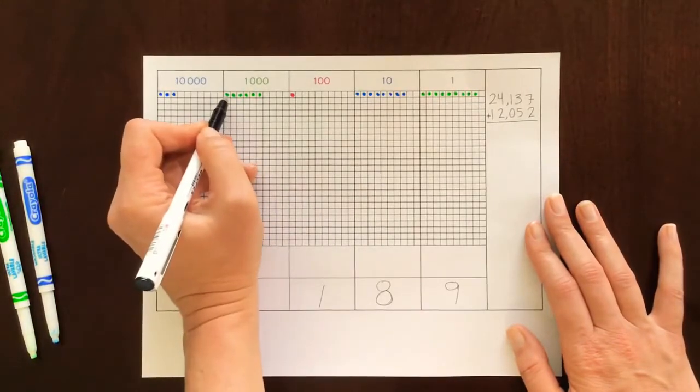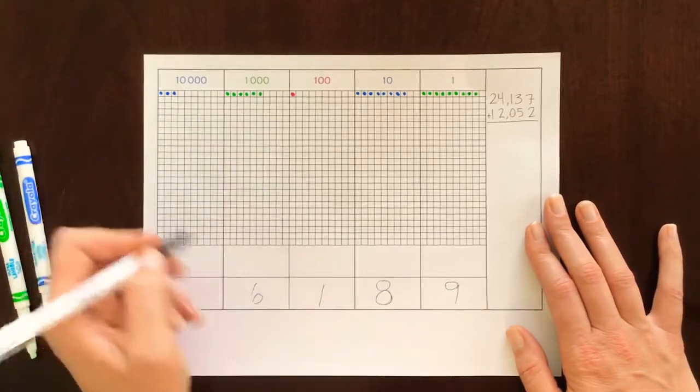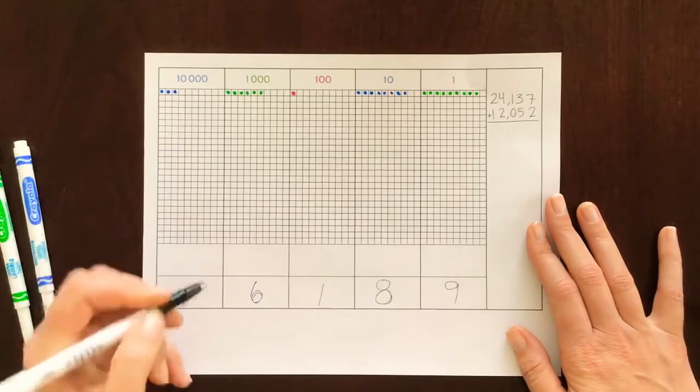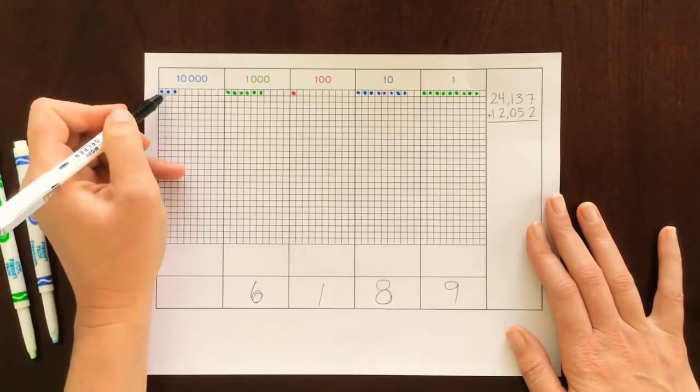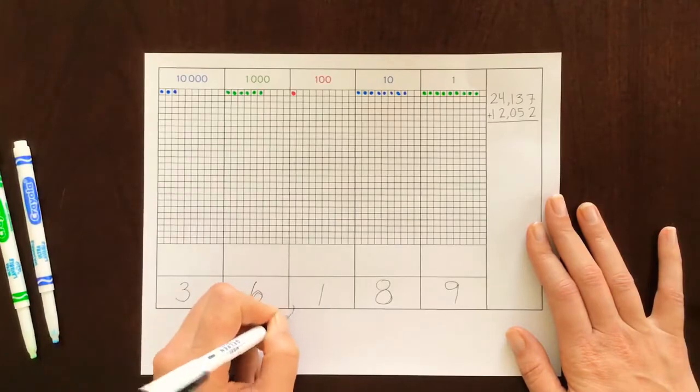And the thousands one, two, three, four, five, six. This pen is running out of ink. The ten thousands one, two, three. And we can put our comma right there.